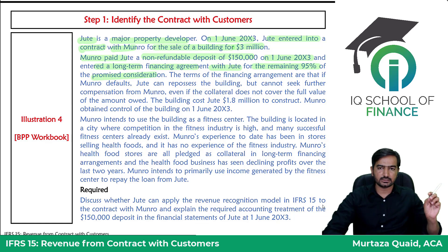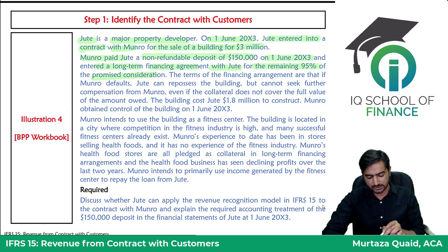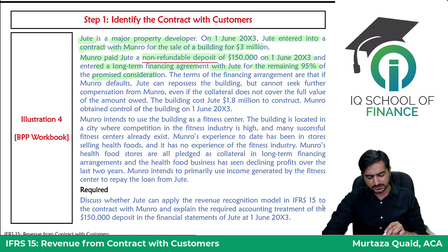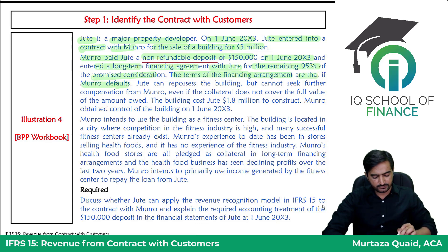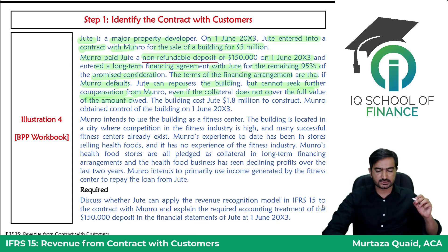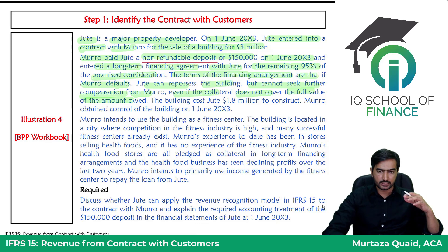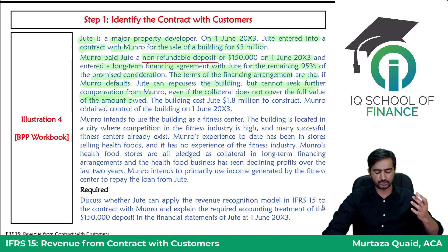Munro entered into a long-term financing agreement with Jute for the remaining ninety-five percent of the promised consideration — approximately two point eight five million dollars. The terms of the financing arrangement state that if Munro defaults, Jute can repossess the building but cannot seek further compensation from Munro, even if the collateral does not cover the full value of the amount owed. This means the loan is non-recourse.